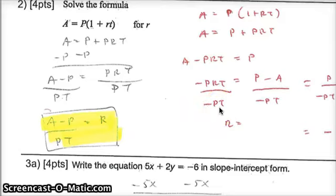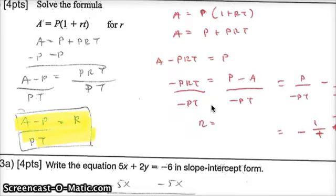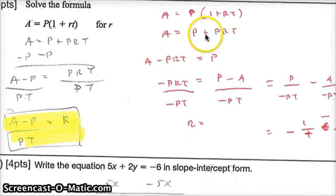Now I believe one student tried a different method. And I showed the work over here. Once you distribute, you subtracted A minus PRT here. Notice how the R is still there. So you're kind of bouncing back and forth. You subtract A to both sides. Divide by negative PT.